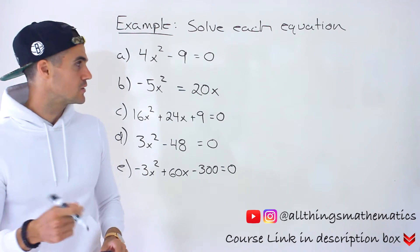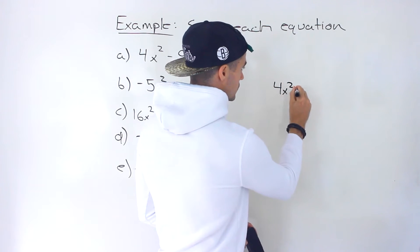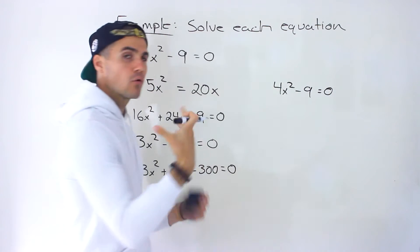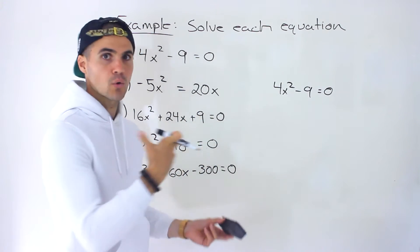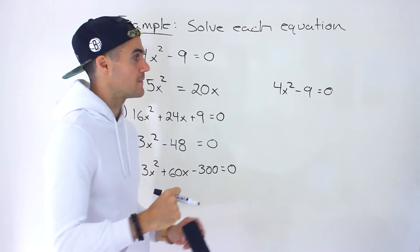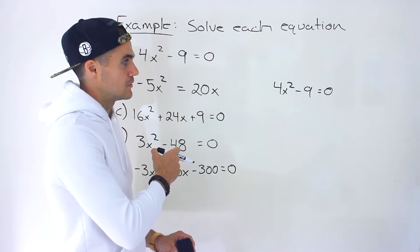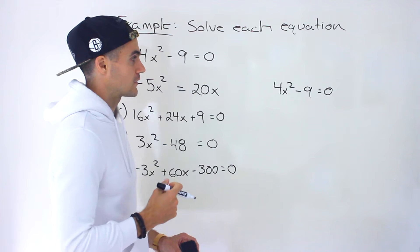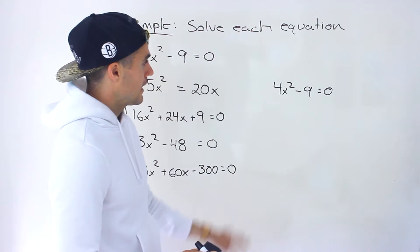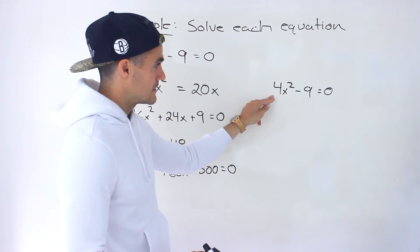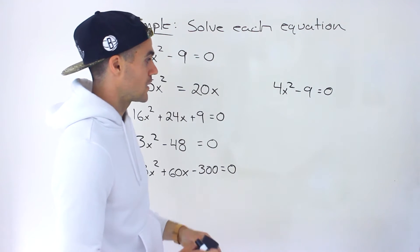We got 4x squared minus 9 is equal to 0. Now all of these here are going to be able to factor. Remember when we went through the overview for quadratic equations, we said there's different methods of solving these — you could do factoring, you could do the quadratic formula, which we haven't covered yet, or completing the square — but all of these here are going to be solved by the method of factoring.